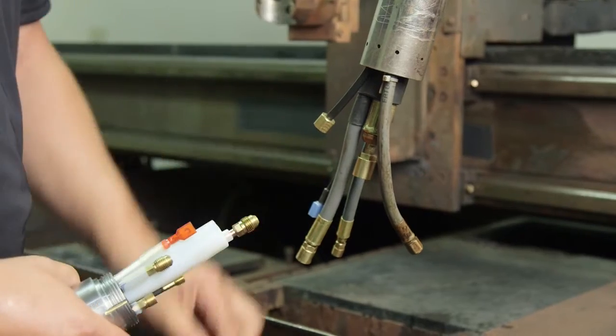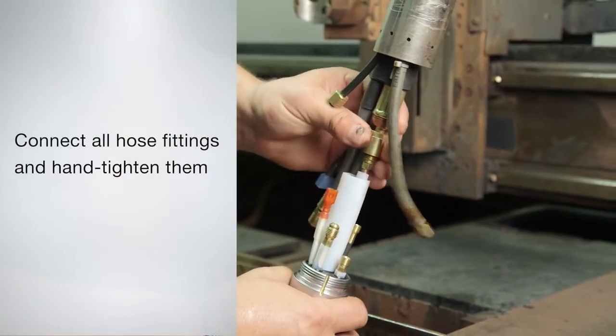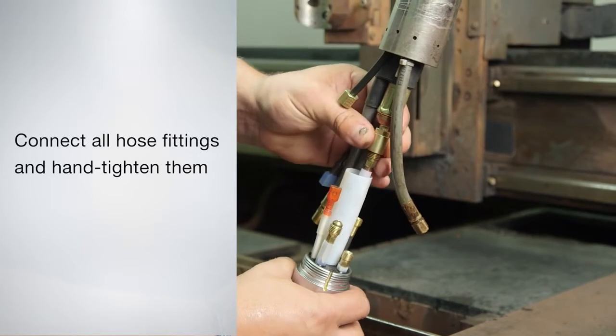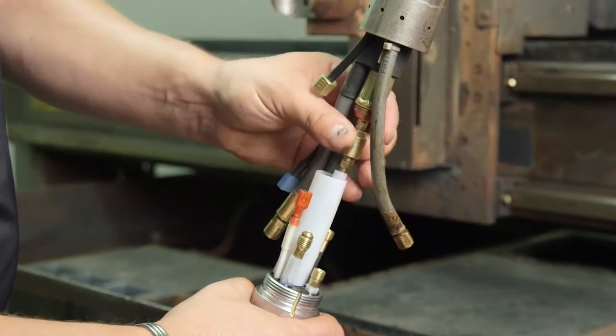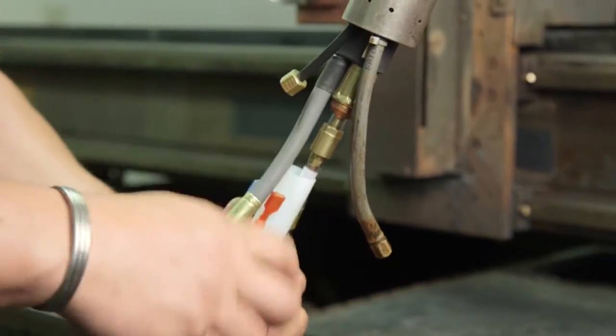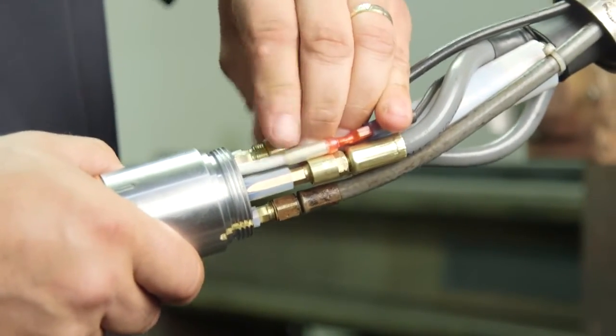With the lower torch body detached from the torch base assembly, connect and hand tighten the hose fittings: coolant in and coolant out, plasma gas, shield gas. Remember that all connections are standard right-hand thread except the coolant return connections, which is a left-hand thread. Then connect the pilot arc.